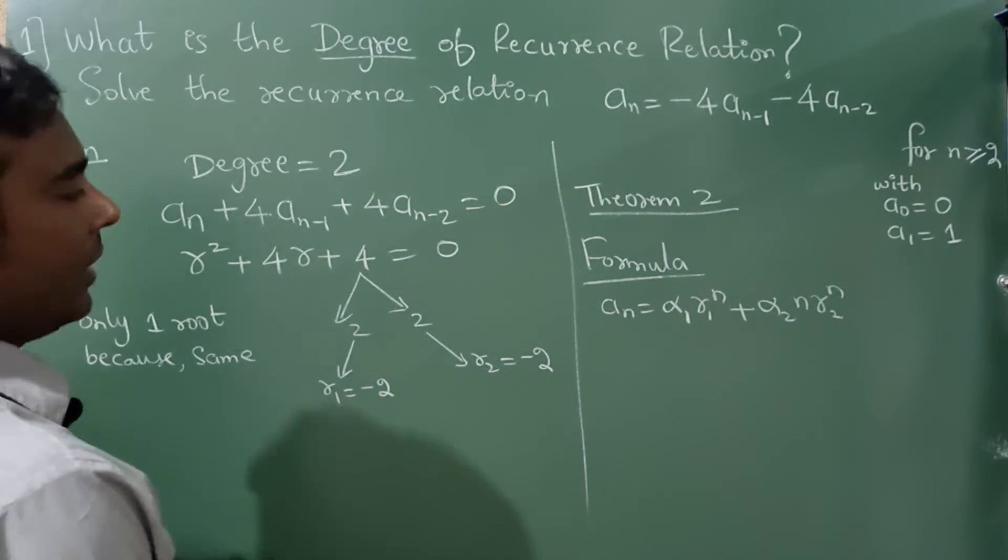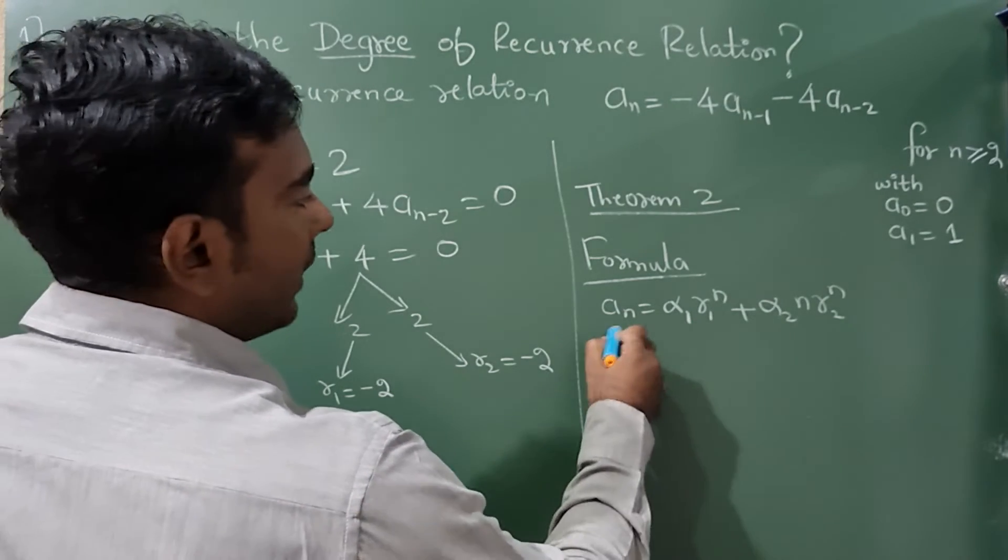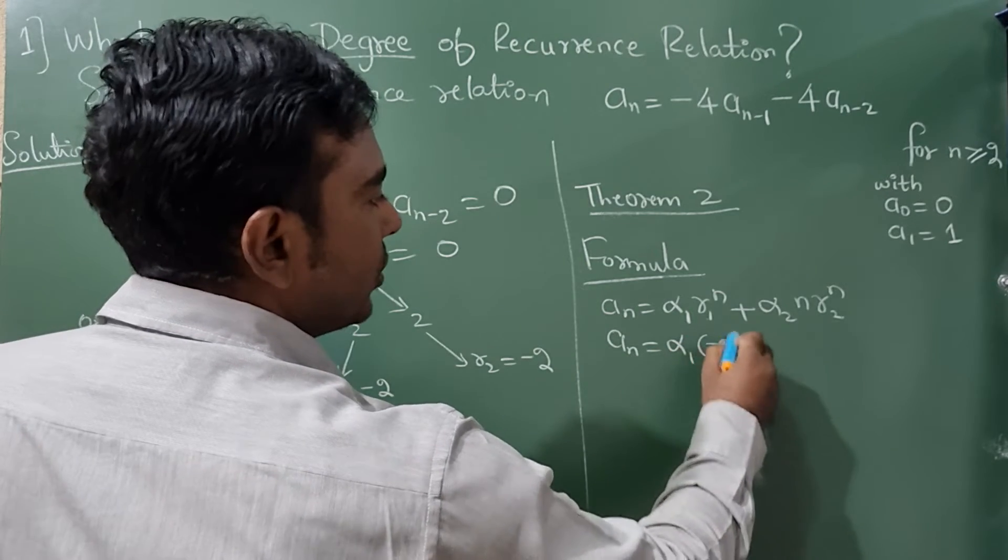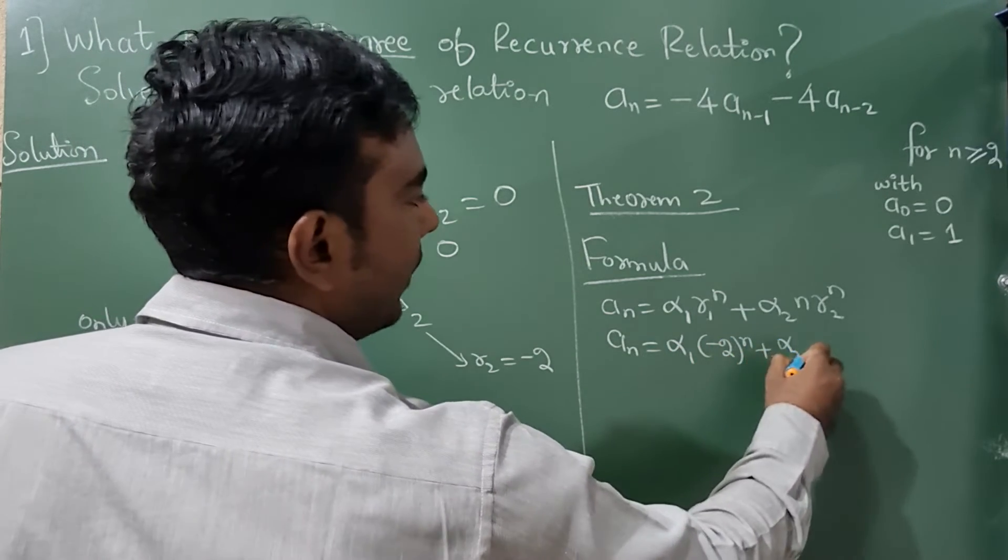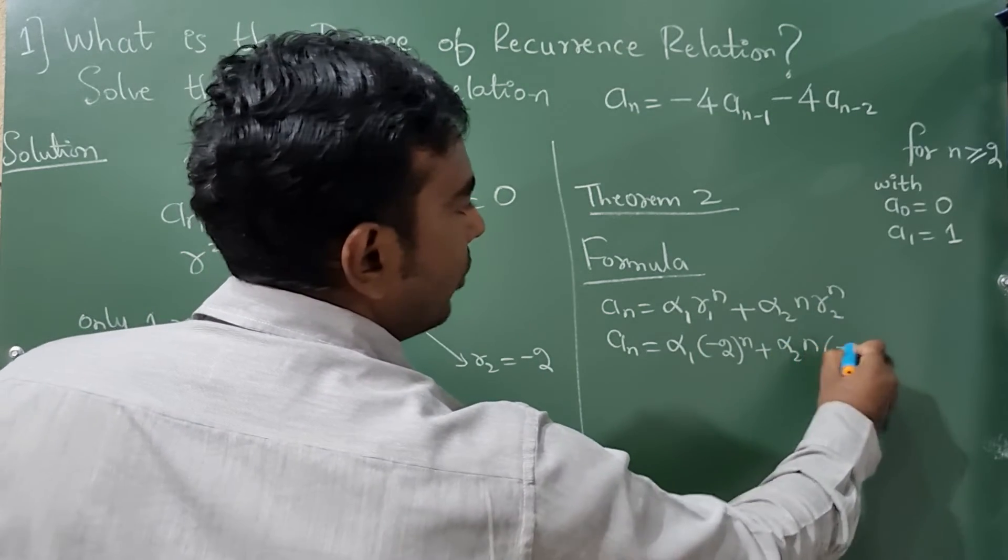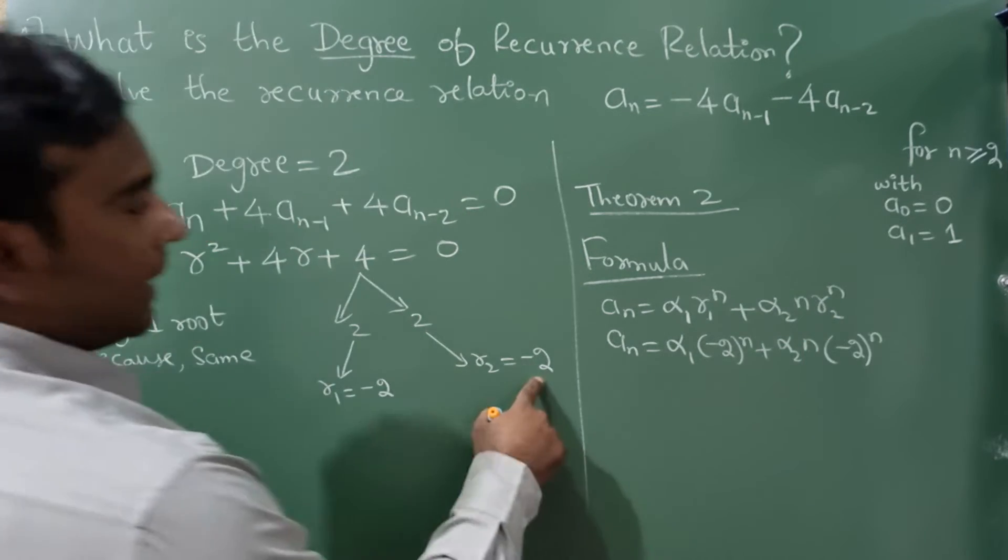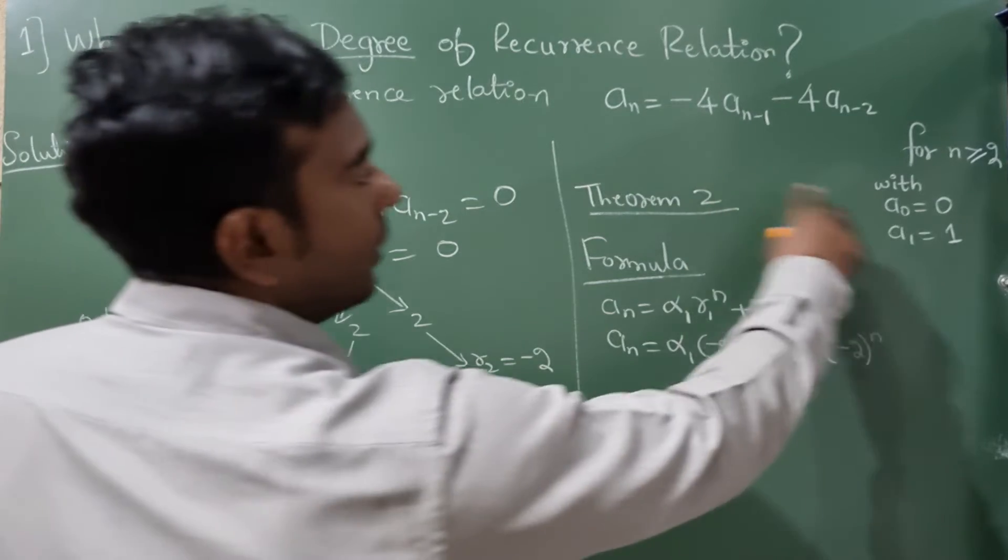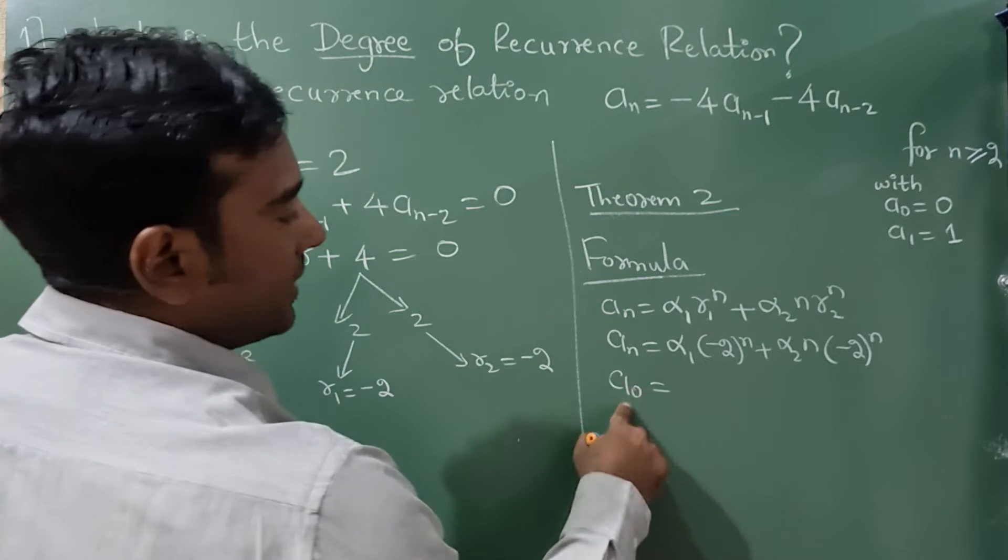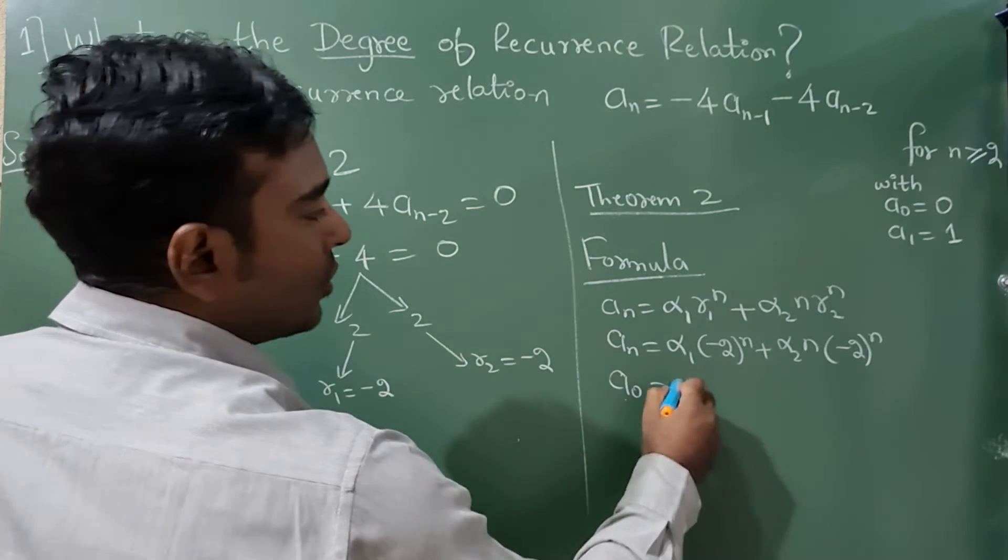Now a_n = α₁, what is r₁ here? -2 raised to n plus α₂n. Write here n, r₂ is also same. Now in the question they have given initial condition, so n value is 0 here, so where there is a_n you need to write 0, plus n value is 0 so whole term will become 0.